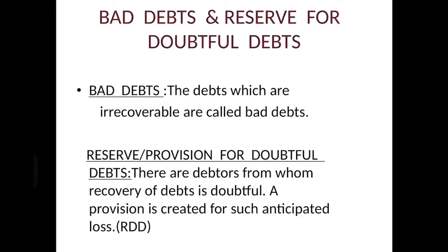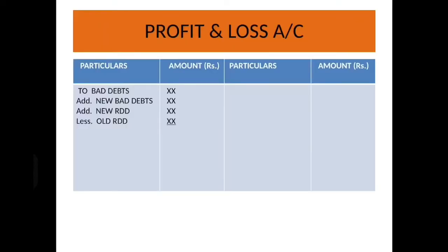This adjustment is very important because students often make mistakes in these calculations. See how it will look in the profit and loss account. Wherever 'new' is given — new bad debts, new RDD — this is from the adjustments. Old bad debts and old RDD are given in the trial balance, and new bad debts and new RDD come from the adjustments. Remember this formula: old bad debts, add new bad debts, add new RDD, less old RDD.